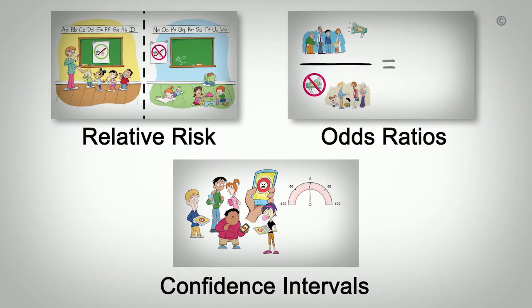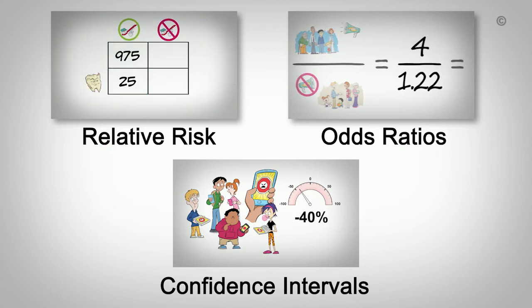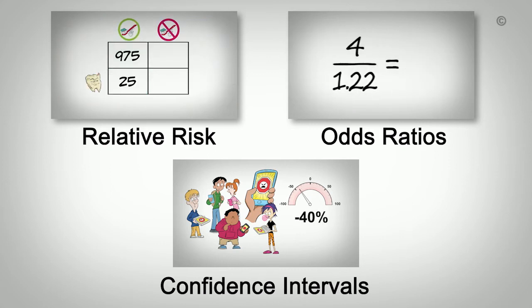Please view the other videos in this series to learn how to use relative risks, odds ratios, and confidence intervals in your decision-making. These valuable concepts will give you an estimate of how likely the result is, whether it is statistically significant, and how large the effect is. What they don't tell you is who an intervention worked for or how many people had the desired outcome.